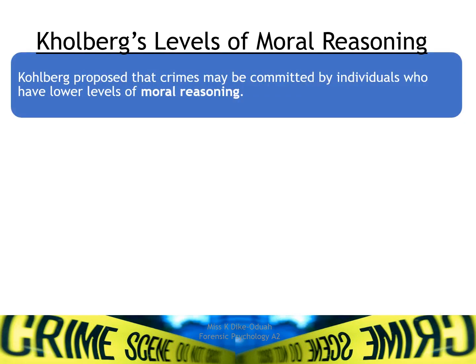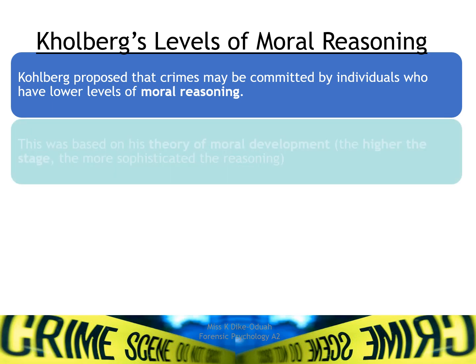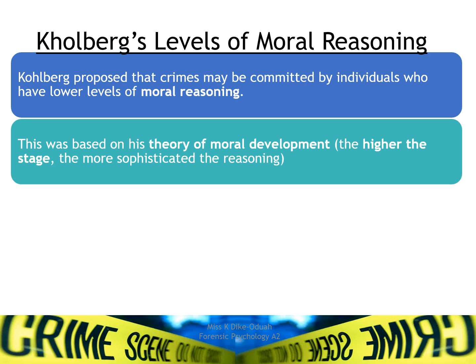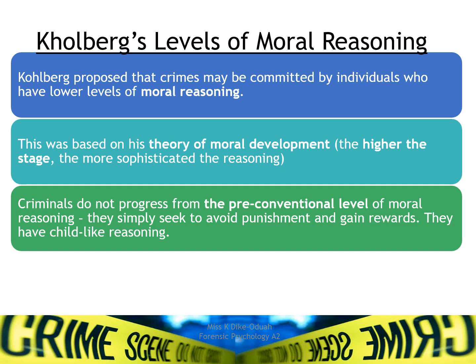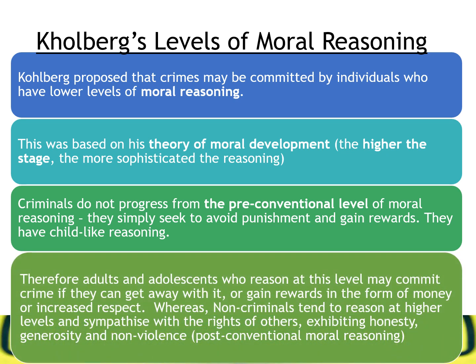Kohlberg proposed that crimes may be committed by individuals with lower levels of moral reasoning — the higher the stage, the more sophisticated the reasoning. Criminals do not progress from the pre-conventional level; they simply seek to avoid punishment and gain rewards, showing a childlike reasoning. Adults and adolescents reasoning at this level may commit crimes if they can get away with it or gain rewards such as money or increased respect, whereas non-criminals tend to reason at higher levels, sympathising with the rights of others and exhibiting honesty, generosity, and non-violence.